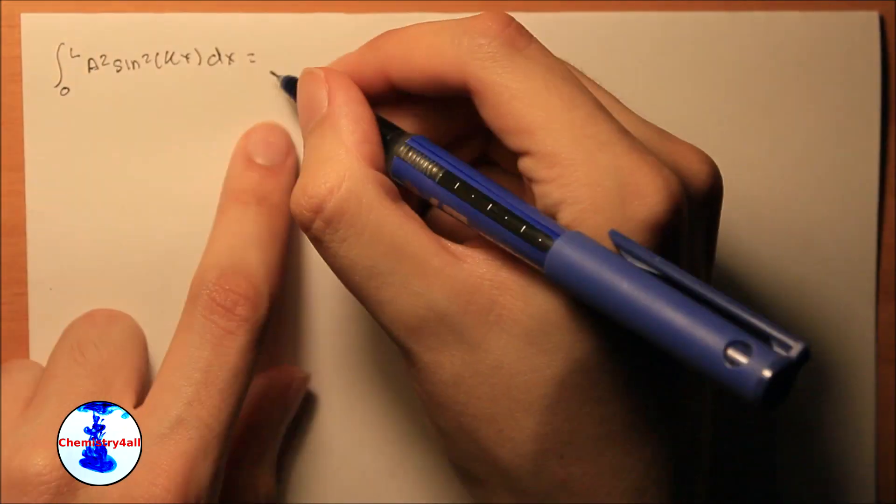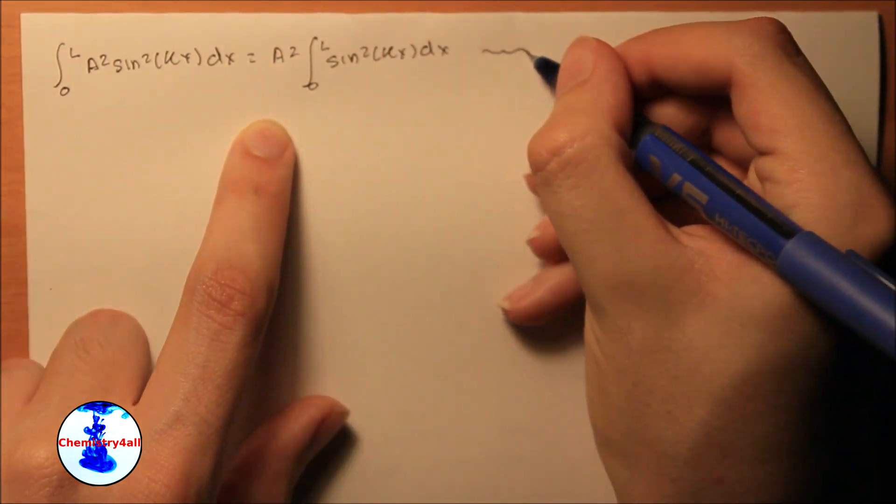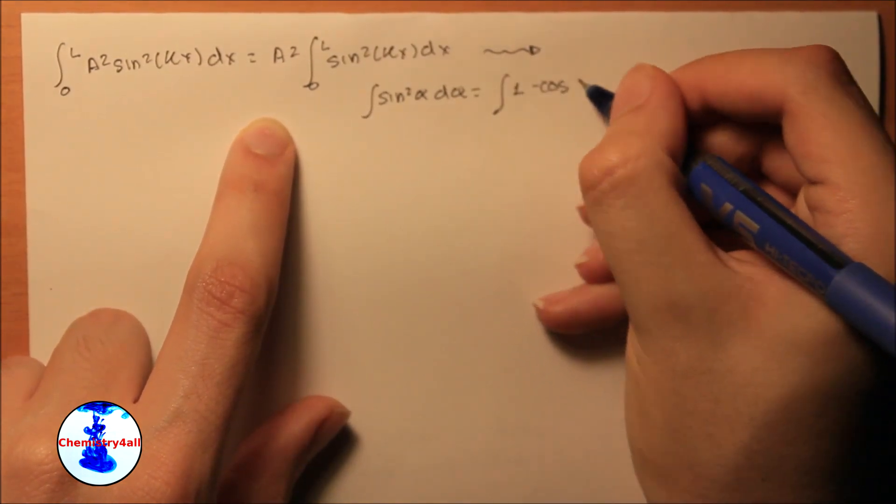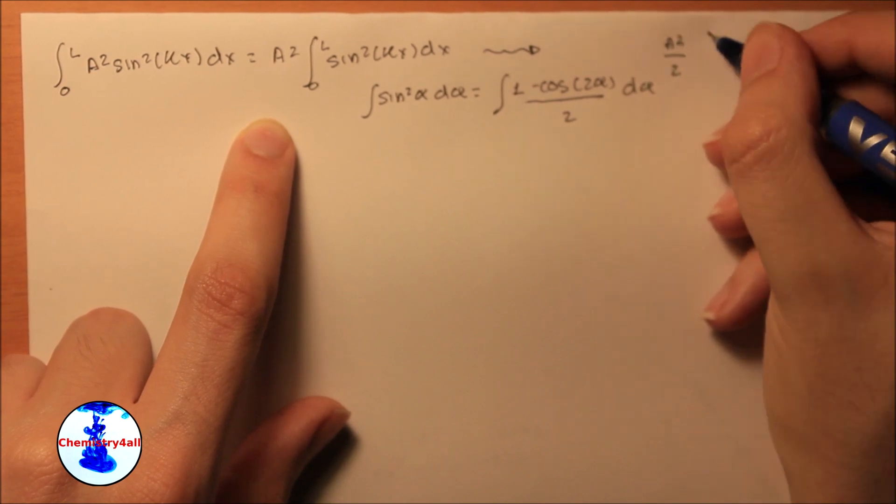Now we can make use of their normalization condition in combination with the probability density function to get the value of a.